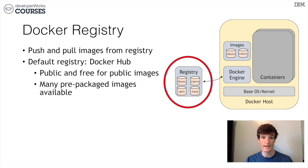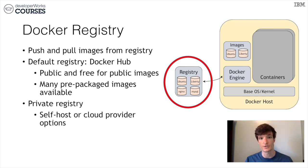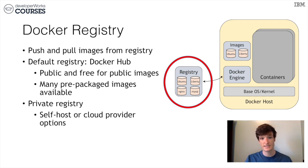Docker Hub is great for learning Docker or using prepackaged images. When you get to using Docker within the enterprise, you'll want to use a private registry. There are hosted options available, or you can host the registry yourself. The cool thing about hosting the Docker registry yourself is that the Docker registry is actually available as a Docker image — so you can simply run docker run registry to run your private registry.